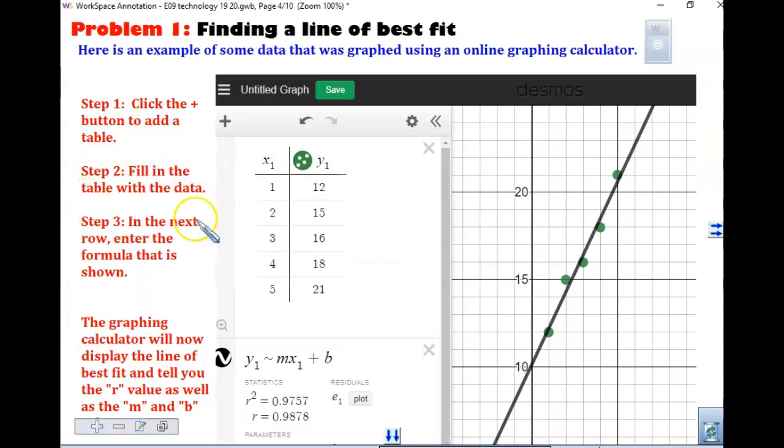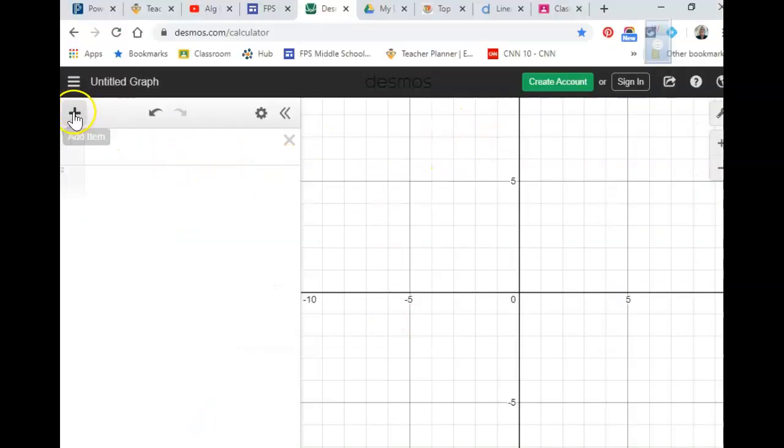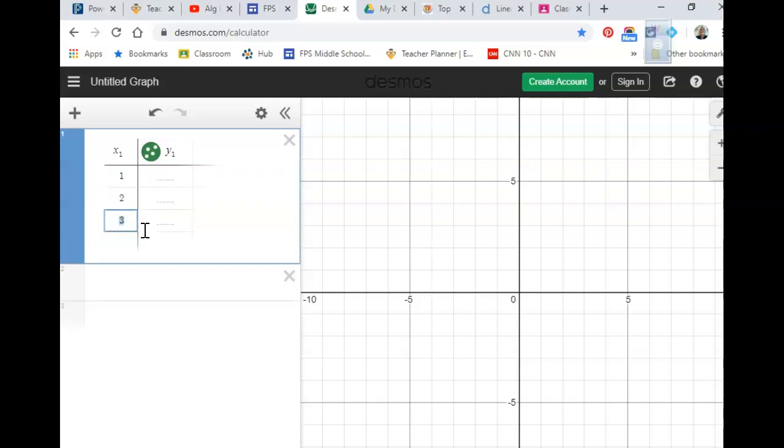This is where hopefully you're all on your Desmos calculator. You want to click the plus button here. If you want to save this you could log in like with Google and then you could save this. What I would like for you to do is as you look at your calculator, you're going to hit the plus. You should have chose table. As you start putting in the numbers, notice that I'm going to put in the 1, hit enter, and I put 2, and then look what happens. It automatically puts in 3, 4. Please make sure that you go up to 5.